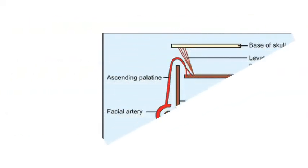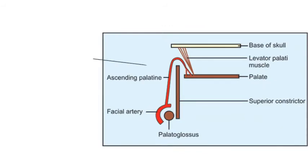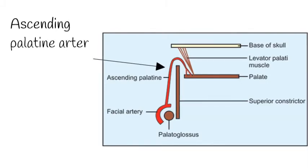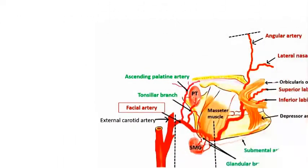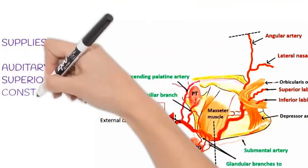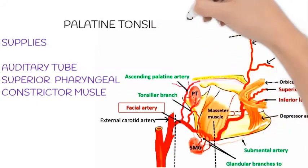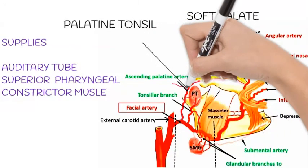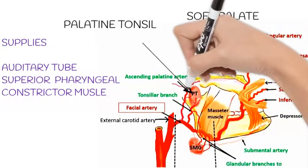The ascending palatine artery passes superiorly between the styloglossus and stylopharyngeus. It divides close to the levator veli palatini muscle into two branches. One branch pierces the superior pharyngeal constrictor to reach the auditory tube and the palatine tonsil. The other branch runs with the levator veli palatini and passes over the superior pharyngeal constrictor to supply the soft palate.